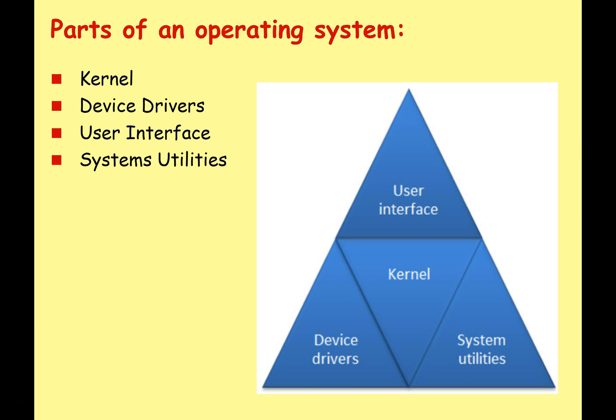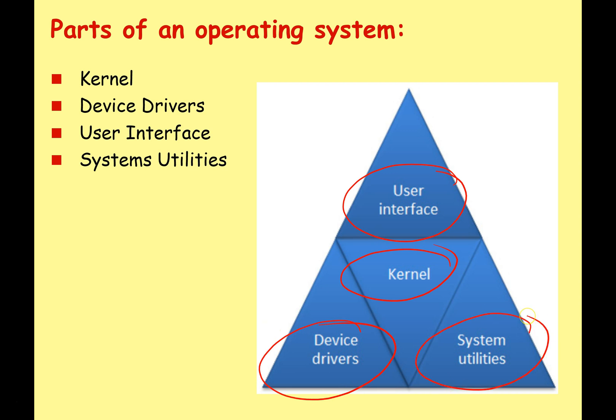Let's do a broad overview of an operating system. Operating systems are hugely complicated pieces of software — modern operating systems are tens of millions of lines of code, certainly the most complex piece of software running on your computer. We're going to look at them from this conceptual overview: in the center we've got the kernel, with user interfaces running on top of that, device drivers allowing the OS to communicate with hardware, and various system utilities.